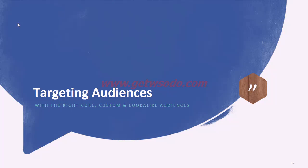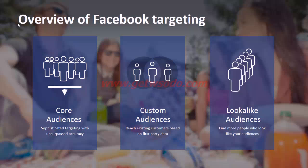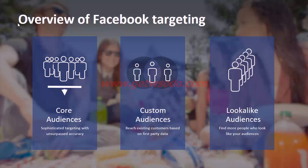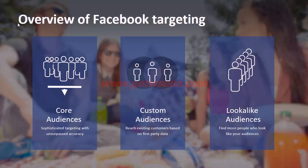Now let's look at targeting audiences — how to target the relevant audience for brand awareness campaigns. There are three ways to target users on Facebook. One is core audiences, where you target using filters like demographics and interests. The second is custom audiences — your existing customers based on data you already have. The third is look-alike audiences, which Facebook helps you create based on your existing audiences.